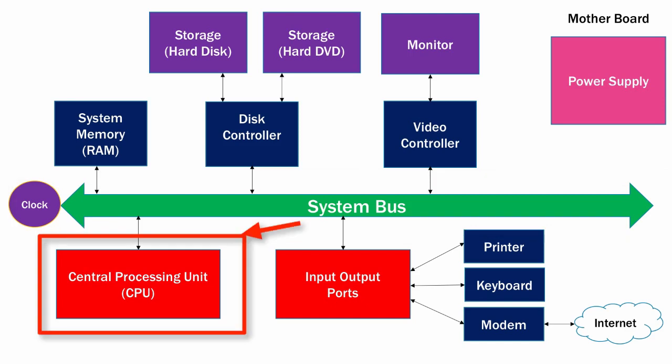The next major component is the central processing unit, or CPU. The CPU is really the brain of the computer and performs all the mathematical computations necessary to operate programs on the computer. Much of the speed of the computer is determined by the clock speed and the processing capabilities of the central processing unit.